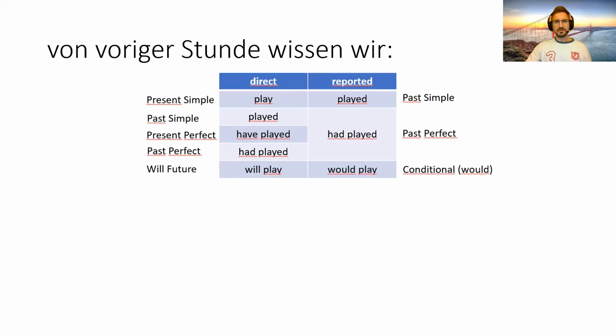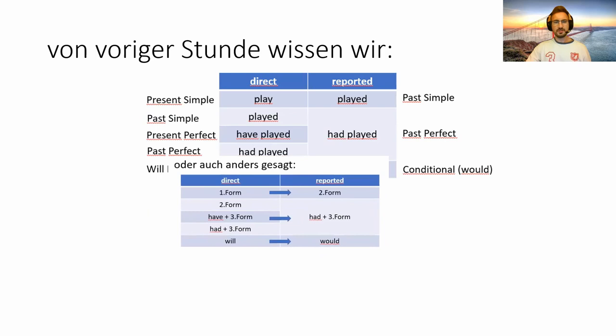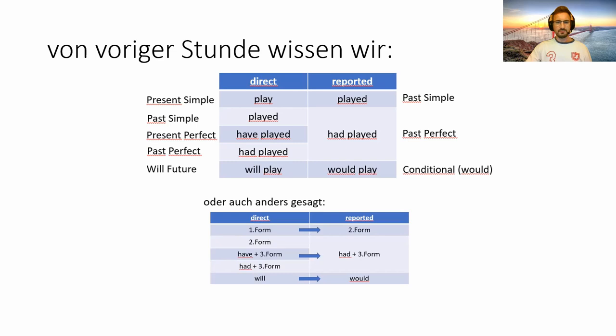From the last lesson we learned how to change the tenses. For example, 'play' becomes 'played' — present simple becomes past simple. If you have a sentence with the past perfect in direct speech, it stays past perfect. Or if you have the present perfect in a sentence, it changes to the past perfect. In other words, the first form becomes the second form; the second form becomes 'had' plus the third form; and 'have' or 'had' plus the third form also changes to 'had' plus the third form, and 'will' becomes 'would'.